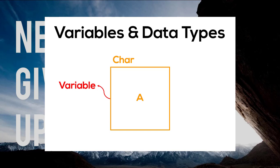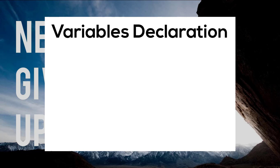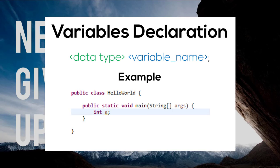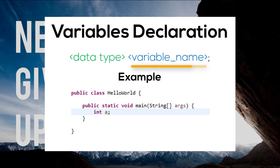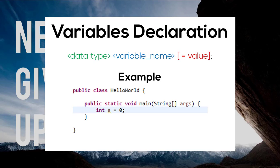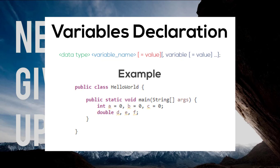One thing to note is that we must declare all variables before they can be used, and the most basic form of variable declaration specifies the data type followed by the variable's name. But typically I'll have both the variable declaration as well as initialization done on the same line of code. Java also allows us to declare and initialize multiple variables of the same type using just one line of code.